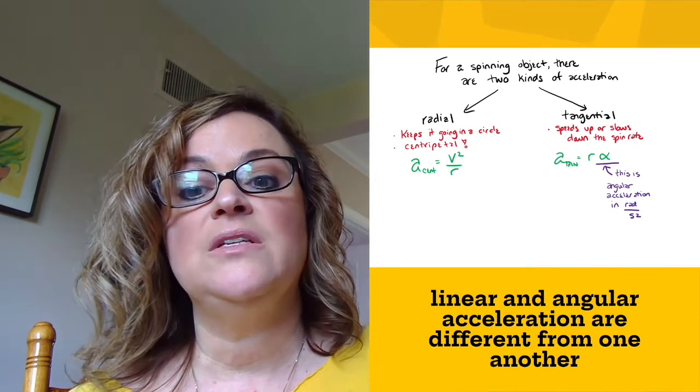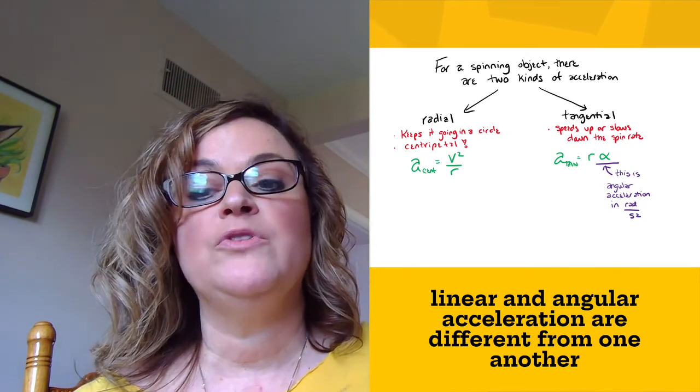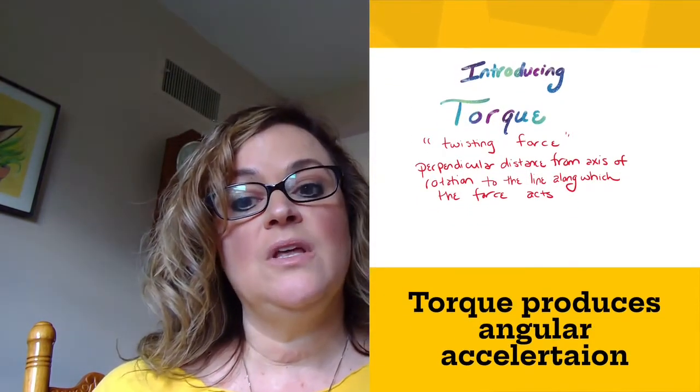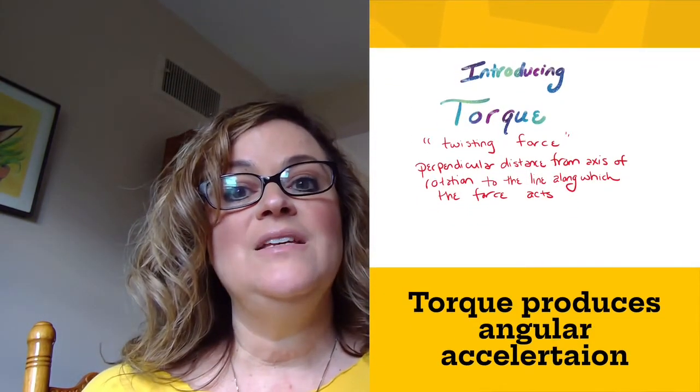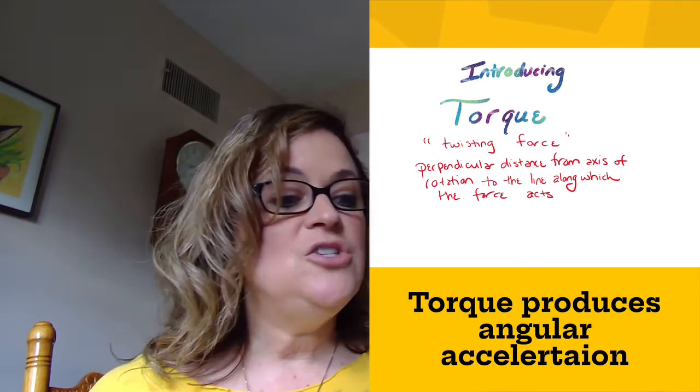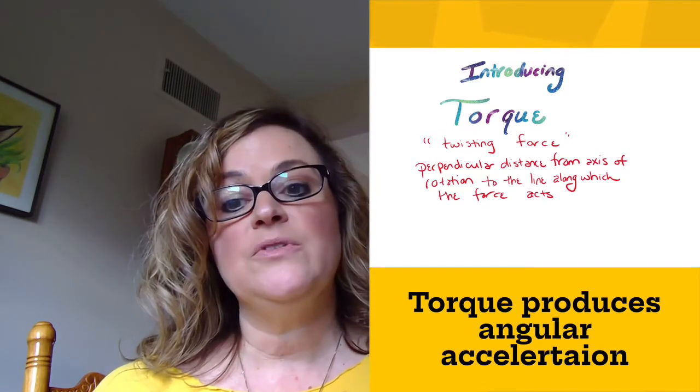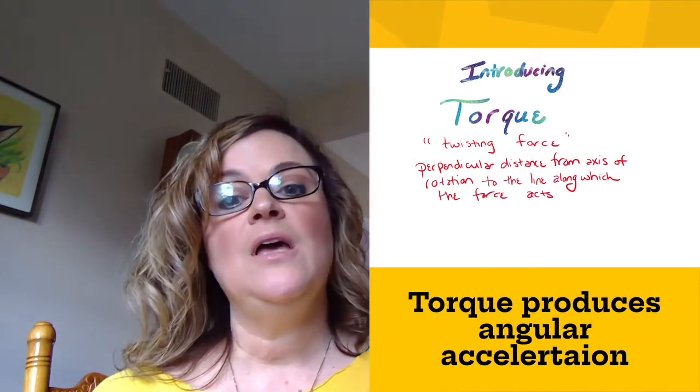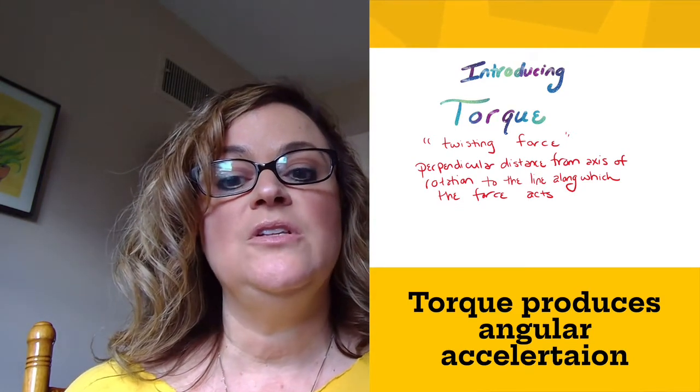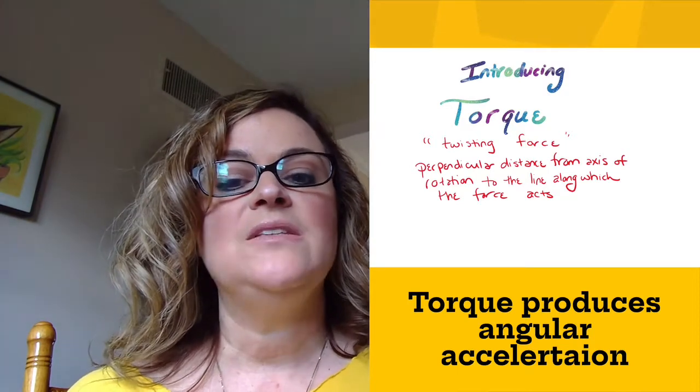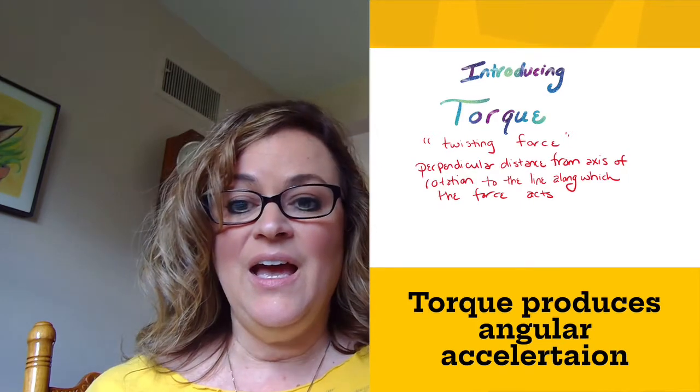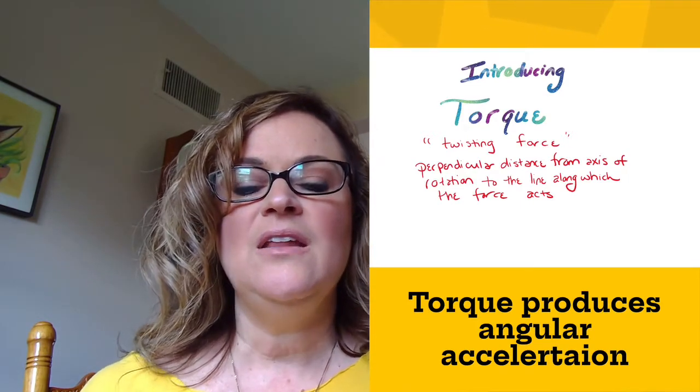We were looking at velocity at that point, but the same concept goes. We're multiplying by radius. What is it that produces angular acceleration? Well, that is a new concept that is called torque. It's spelled T-O-R-Q-U-E, and torque is essentially twisting force. That's a good way to remember what it is. In terms of specific definitions, you could say it's the perpendicular distance from the axis of rotation to the line along which the force is acting. And we're going to look at the detail of that shortly.